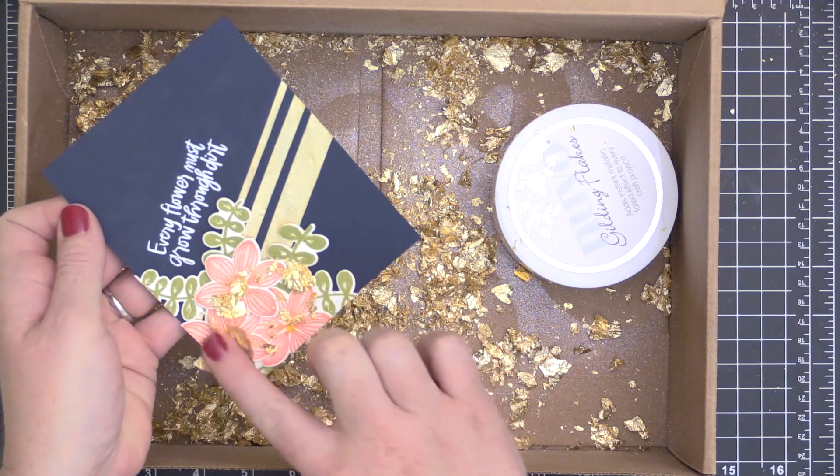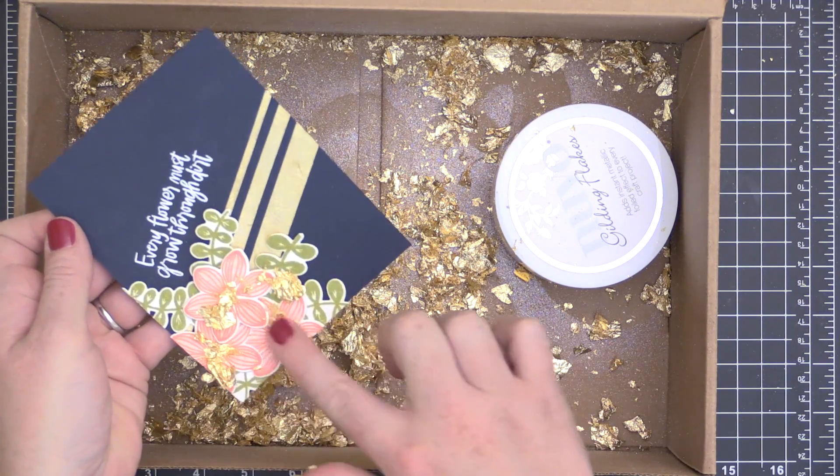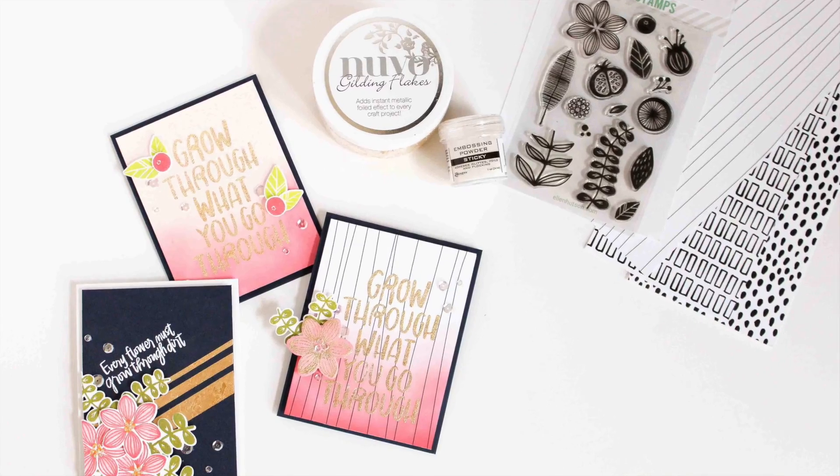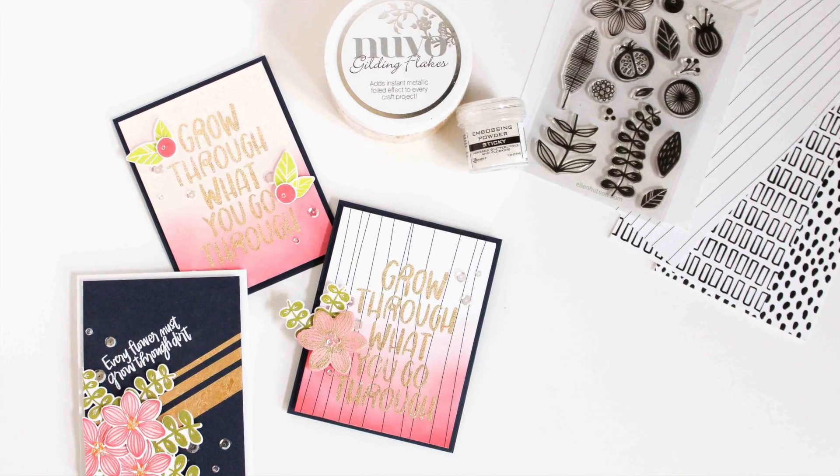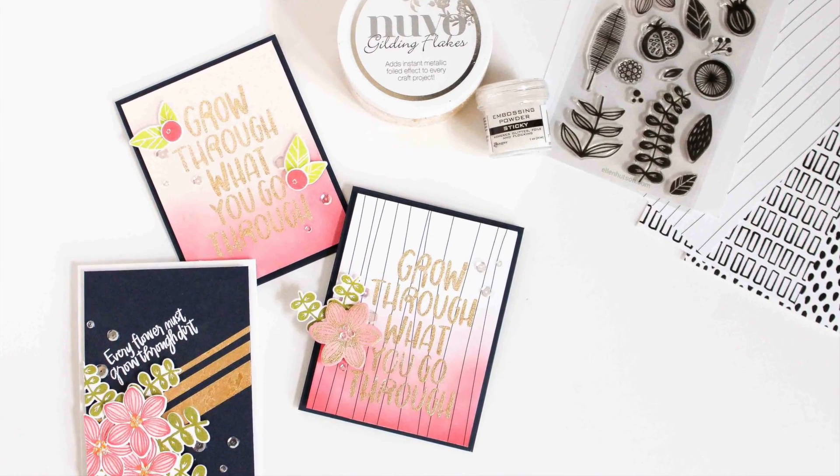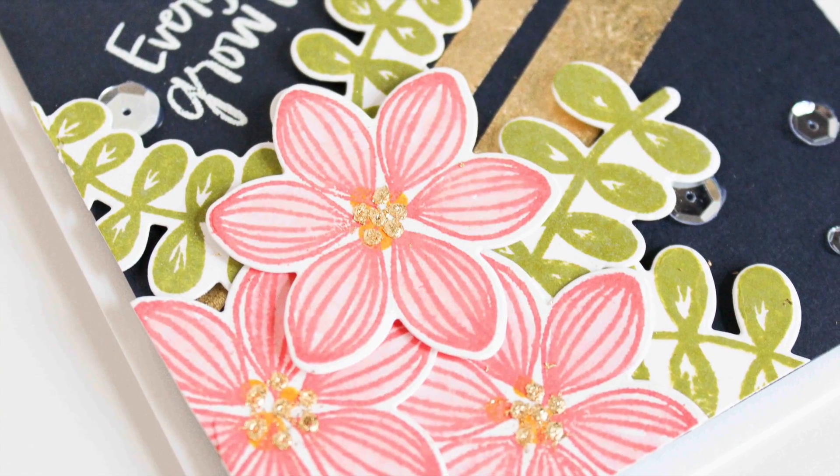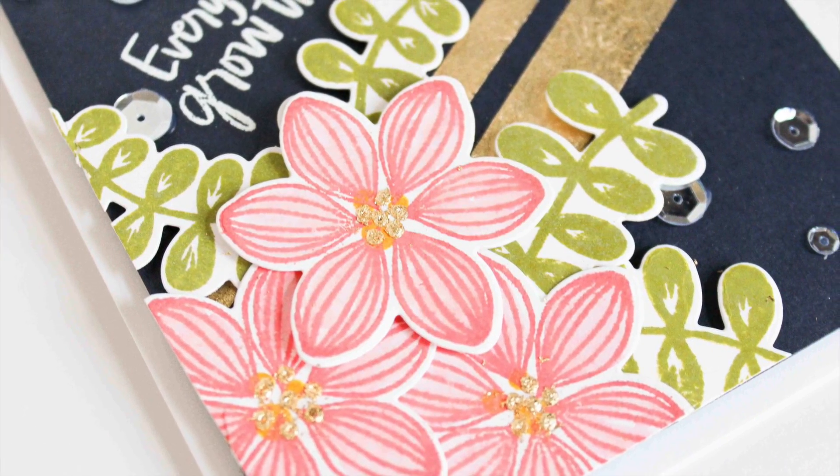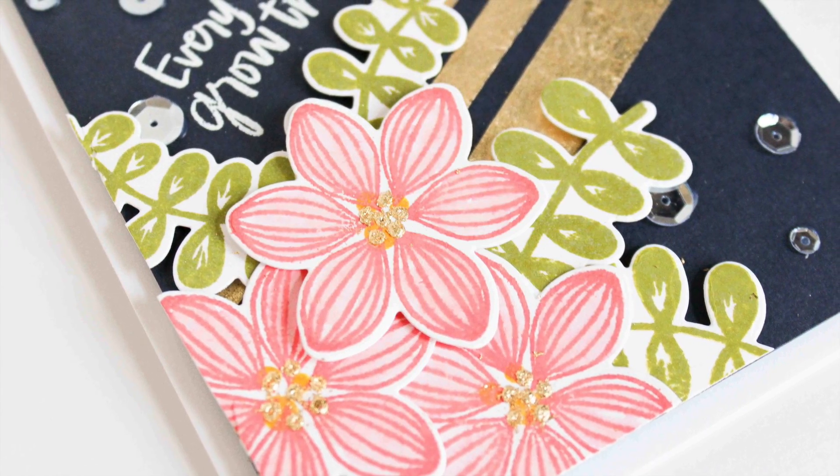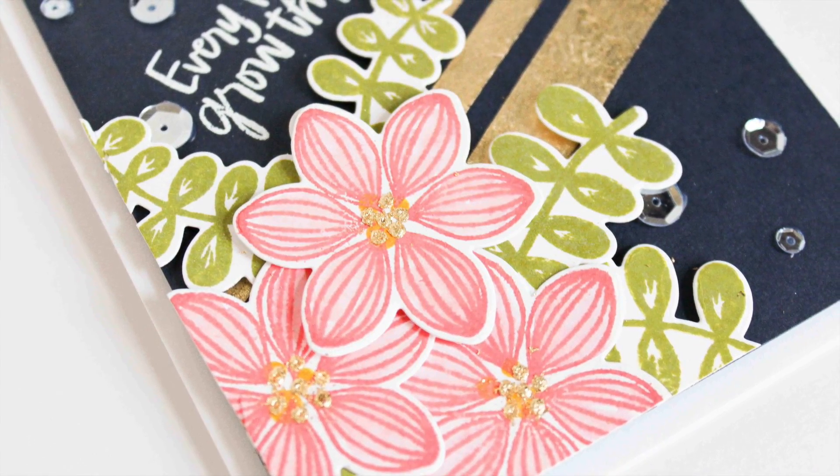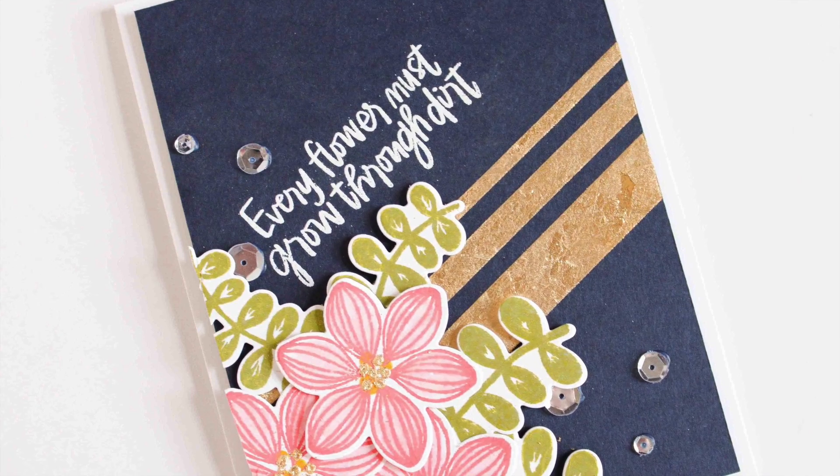I'm going to finish my flowers off by adding a few little dots to the center using my Zig two-way glue pen. Because this glue pen also dries tacky, it's great for adhering little bits or little details onto your stamped images as well. That finishes my card projects for today and this look at the Nouveau gilding flakes.